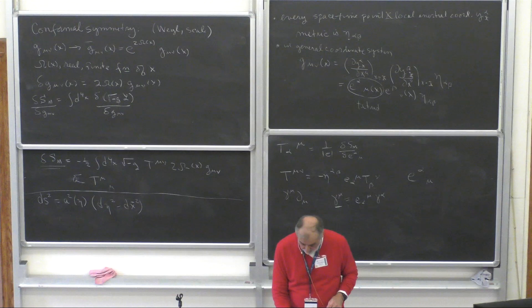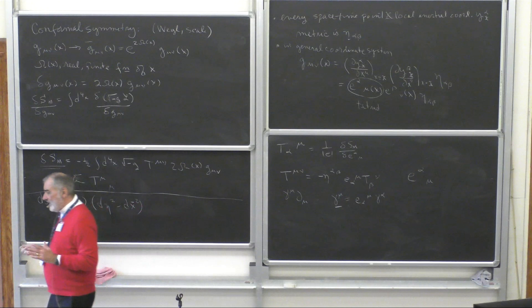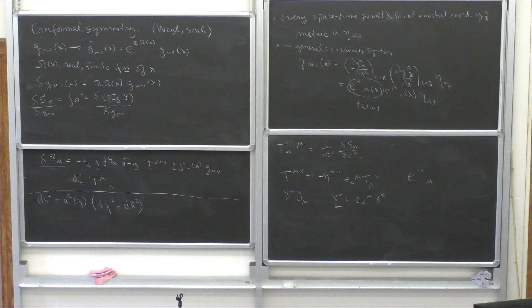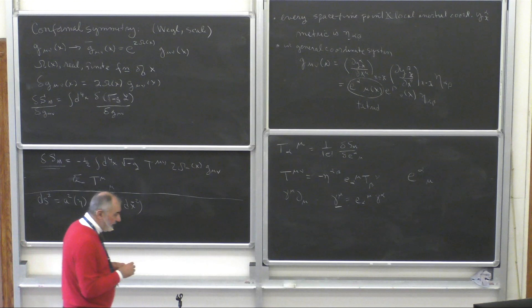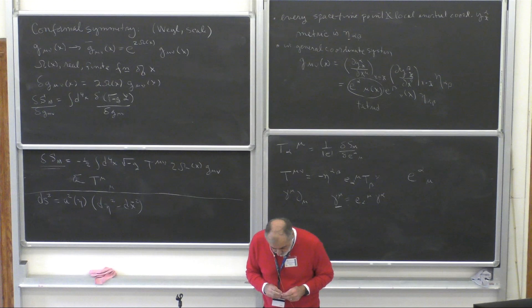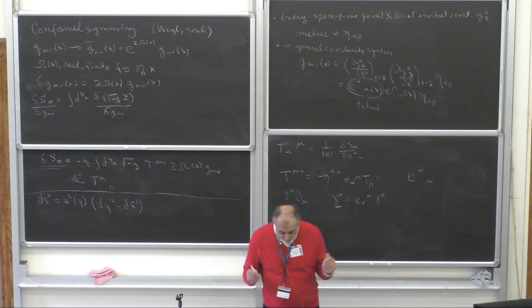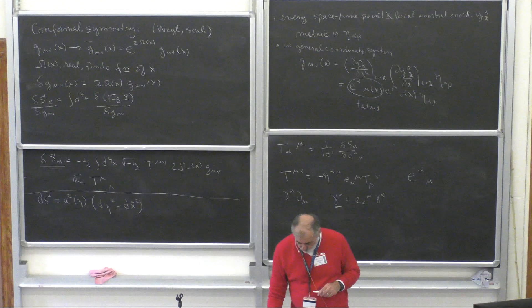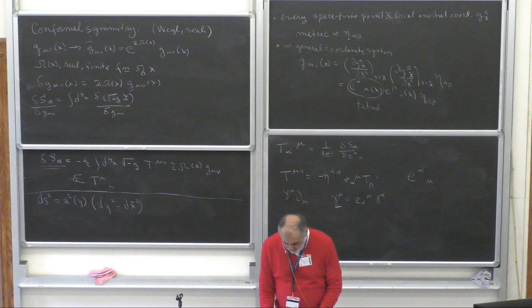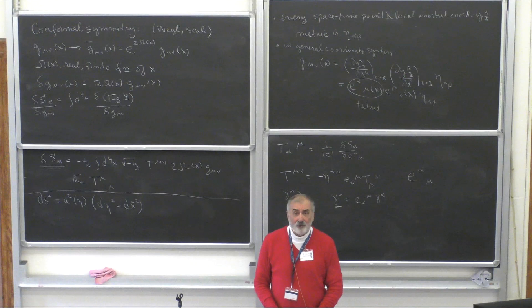This is a classical definition of conformal invariance — there's no scale associated with a conformally invariant theory. In quantum field theory, you have to introduce a scale for renormalization, so conformal invariance will be broken by quantum effects. When I say conformally invariant, I will just mean classically conformally invariant.